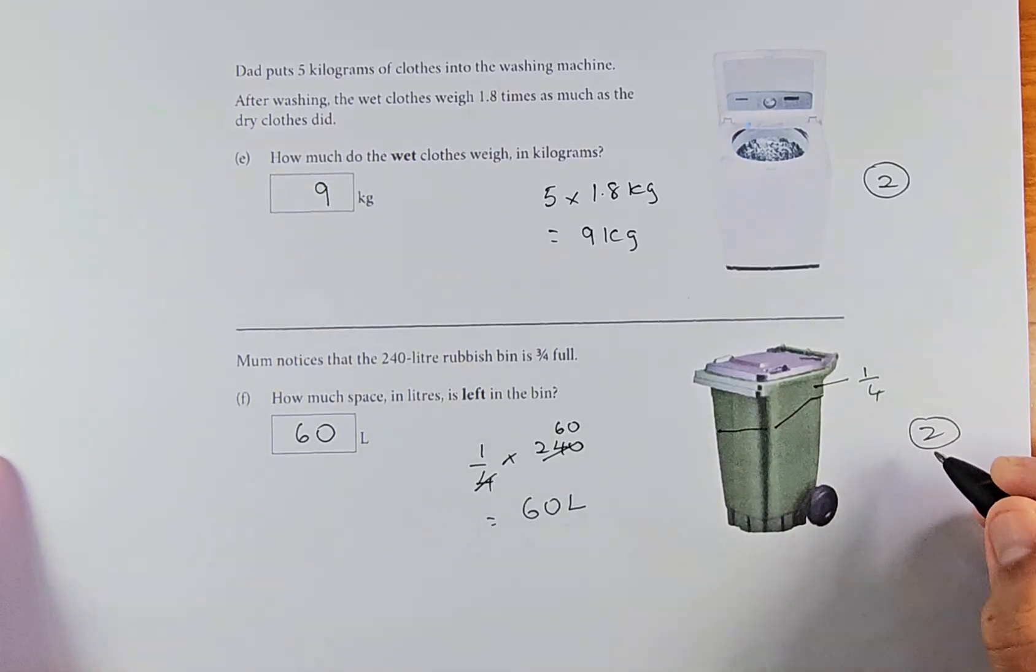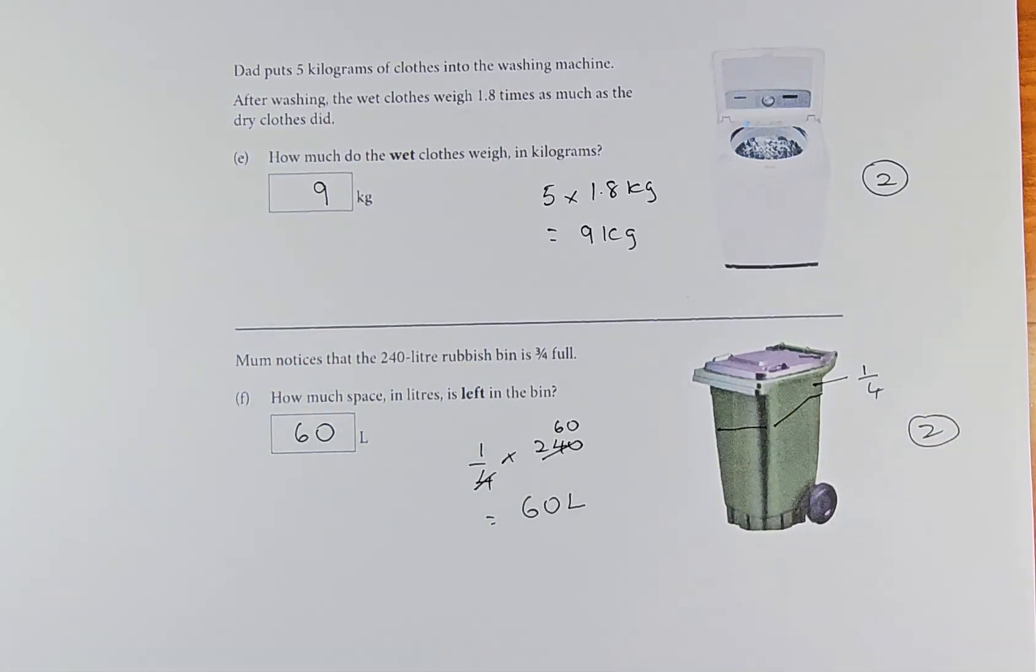So in question number 1, again I repeat, 1a is outcome three. B and C is outcome one. And questions 1d, e and f is outcome two. Watch the next video for question number two. Have a great day everyone and I'll see you soon.